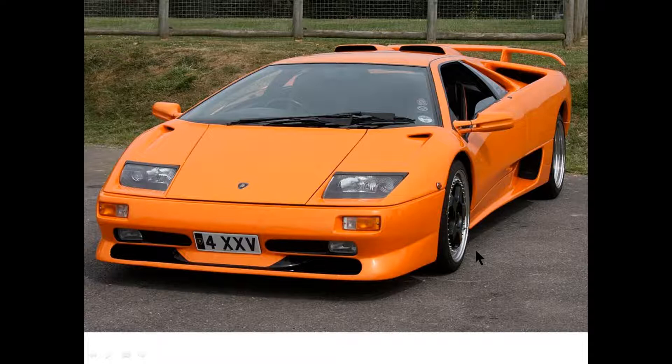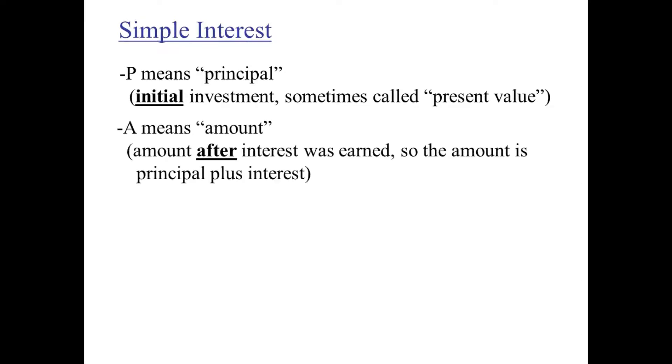Simple interest vocabulary: P stands for principal, the initial investment, sometimes called present value. A is the amount that you owe at the end of the day. It's after interest was earned. So the amount is the principal plus the interest. Put them together, you have the amount. It's kind of like what you would owe the car dealership at the end of the day.